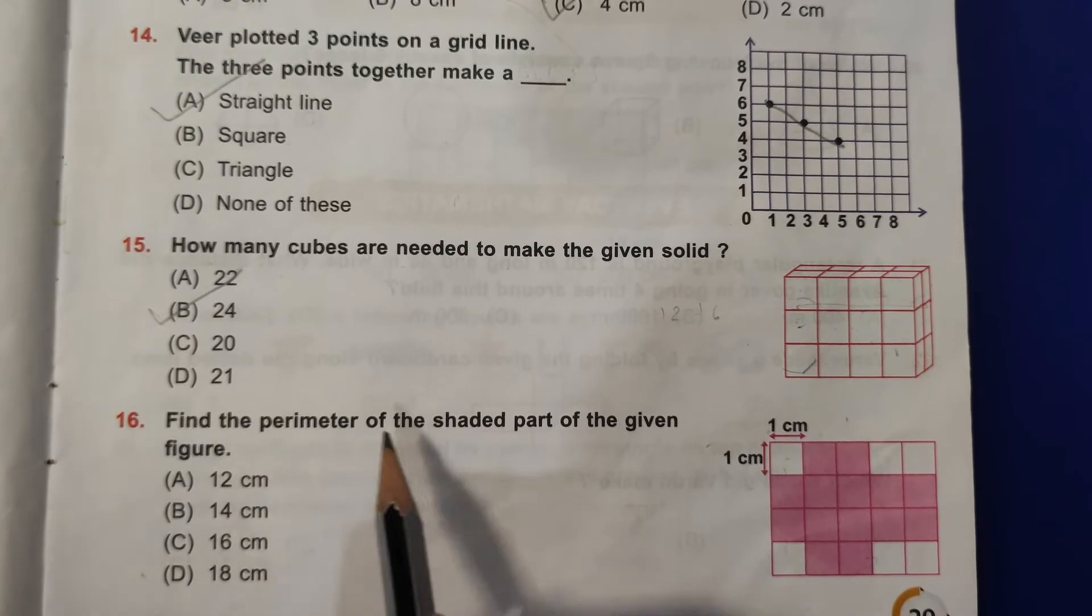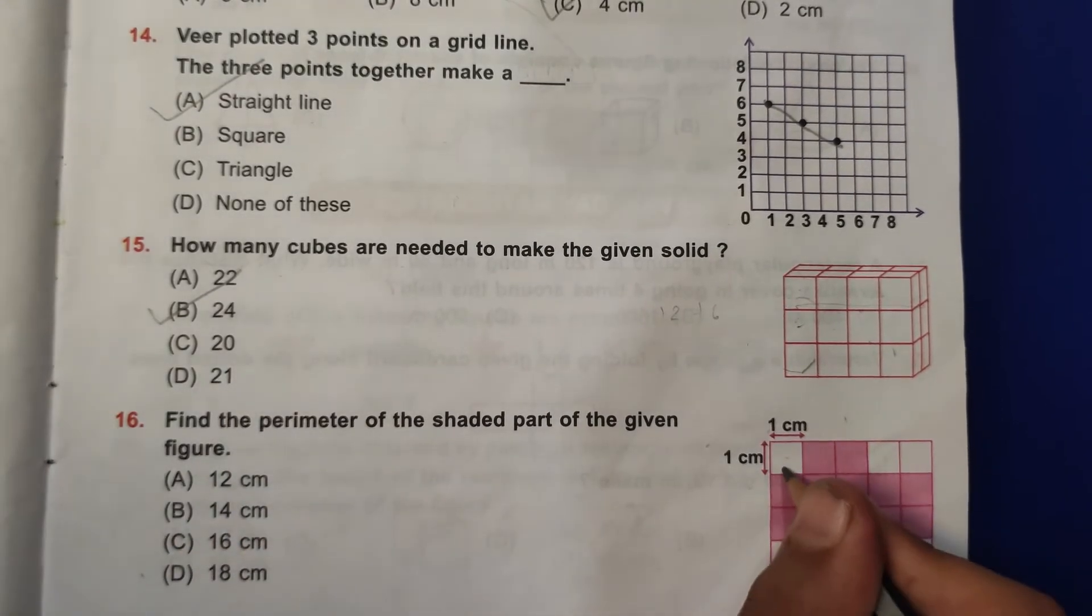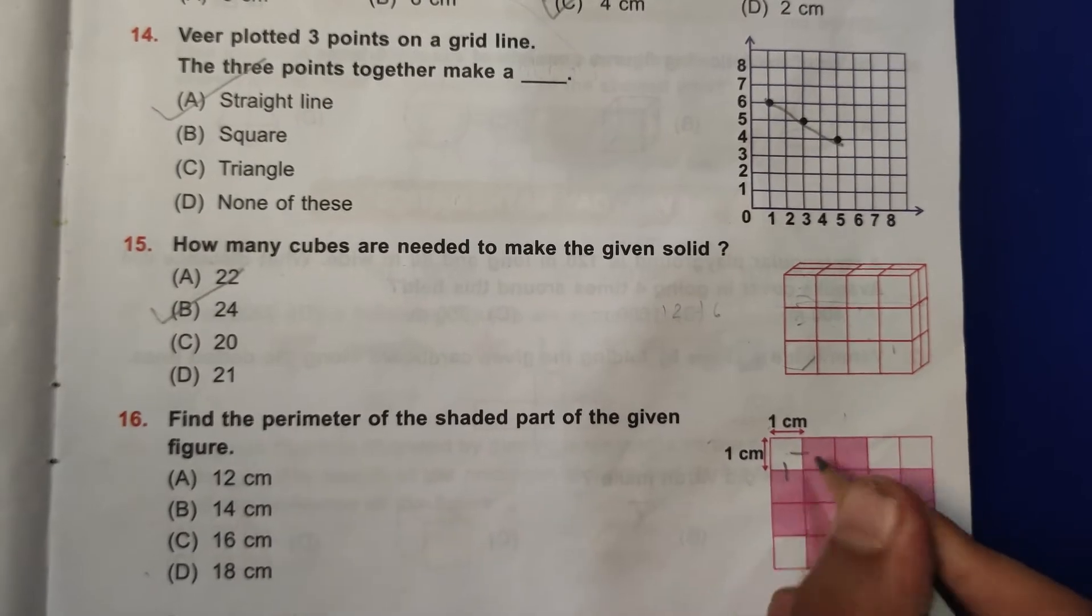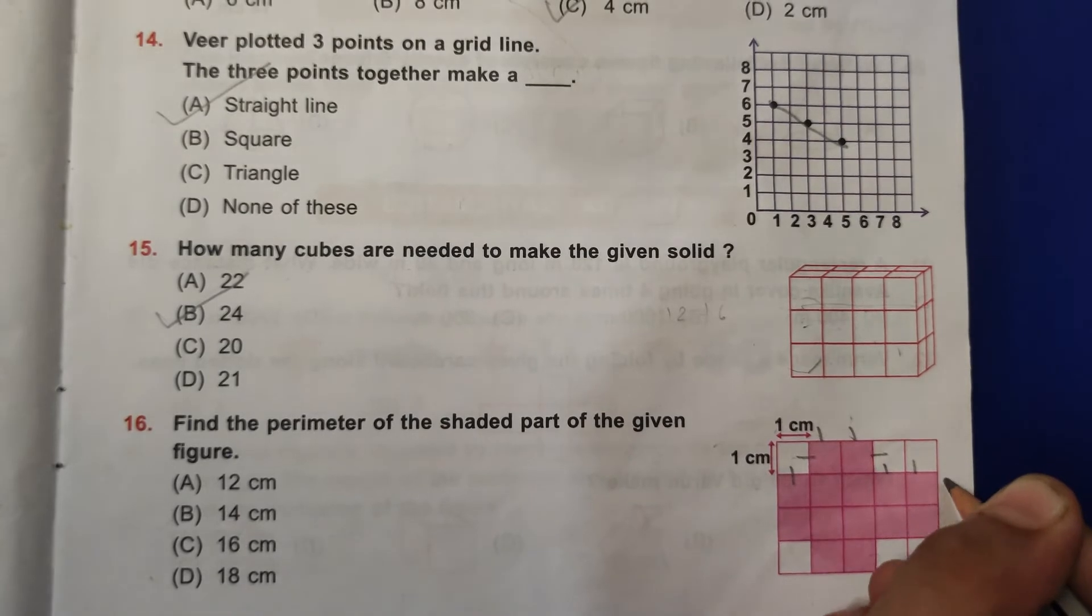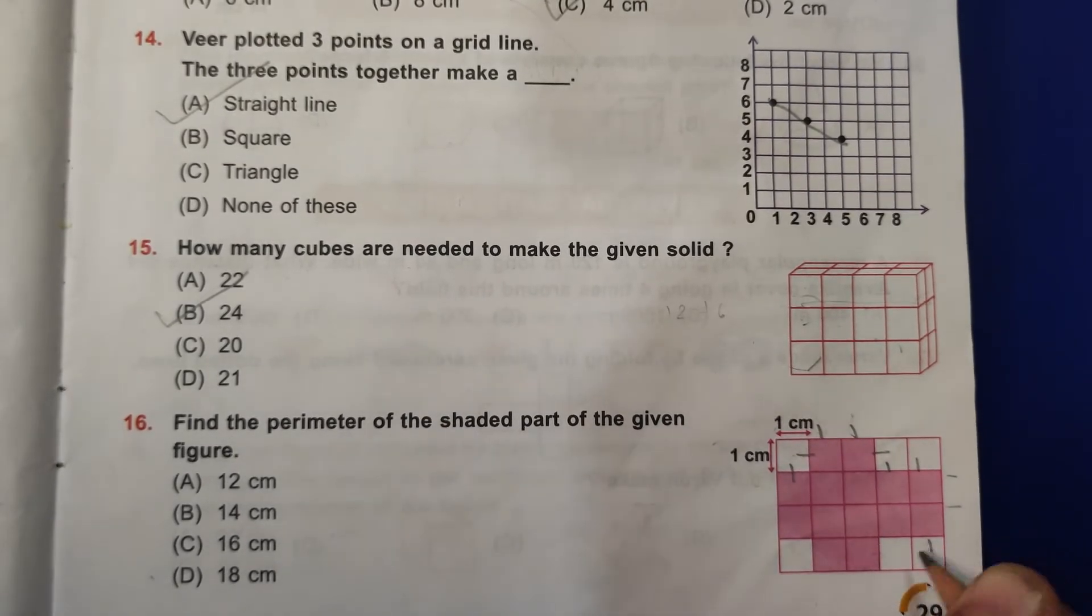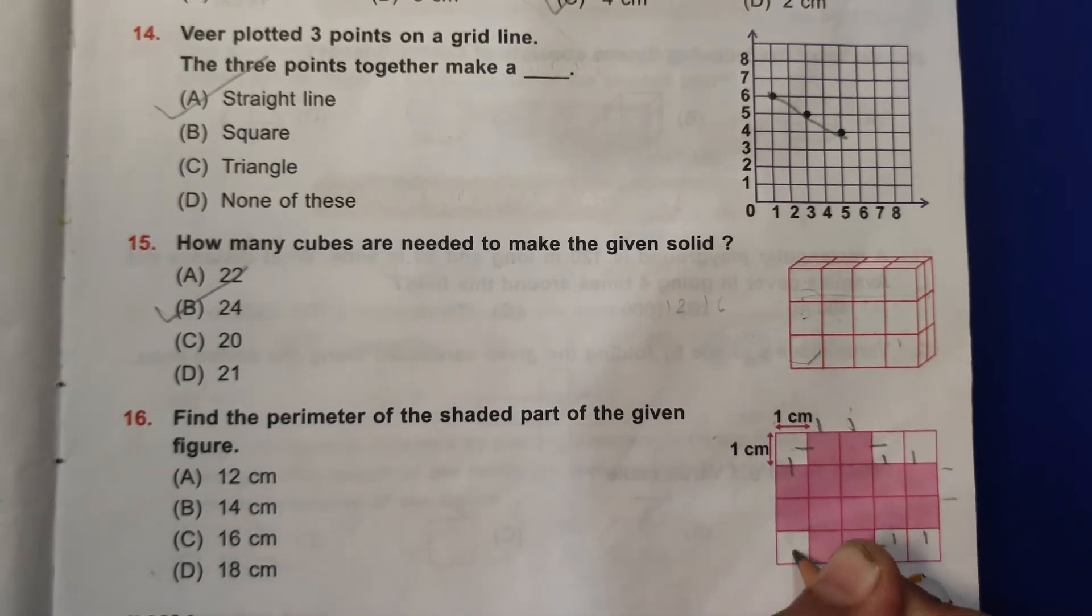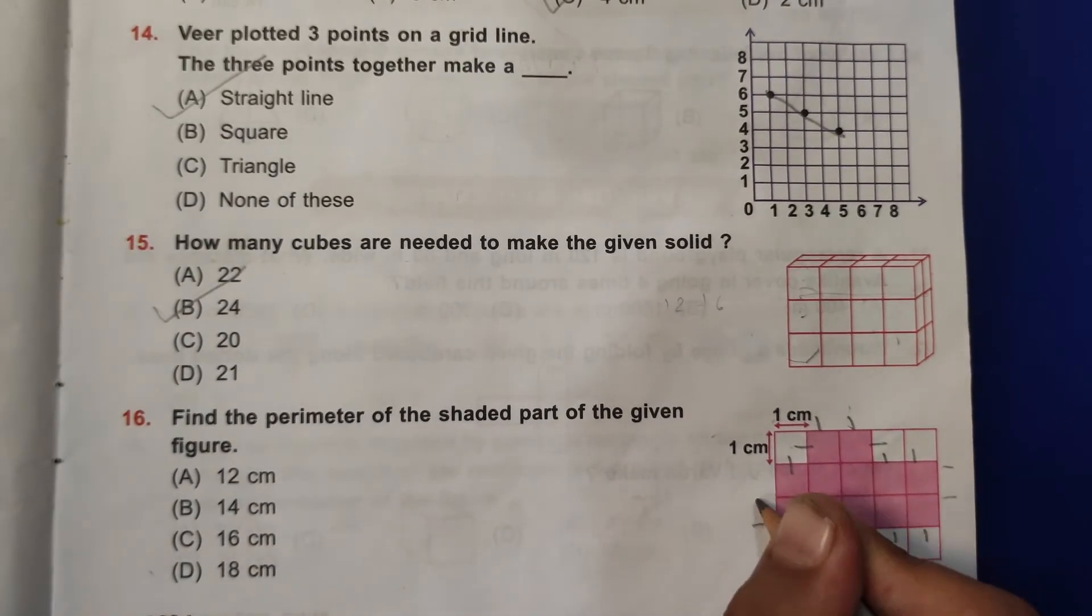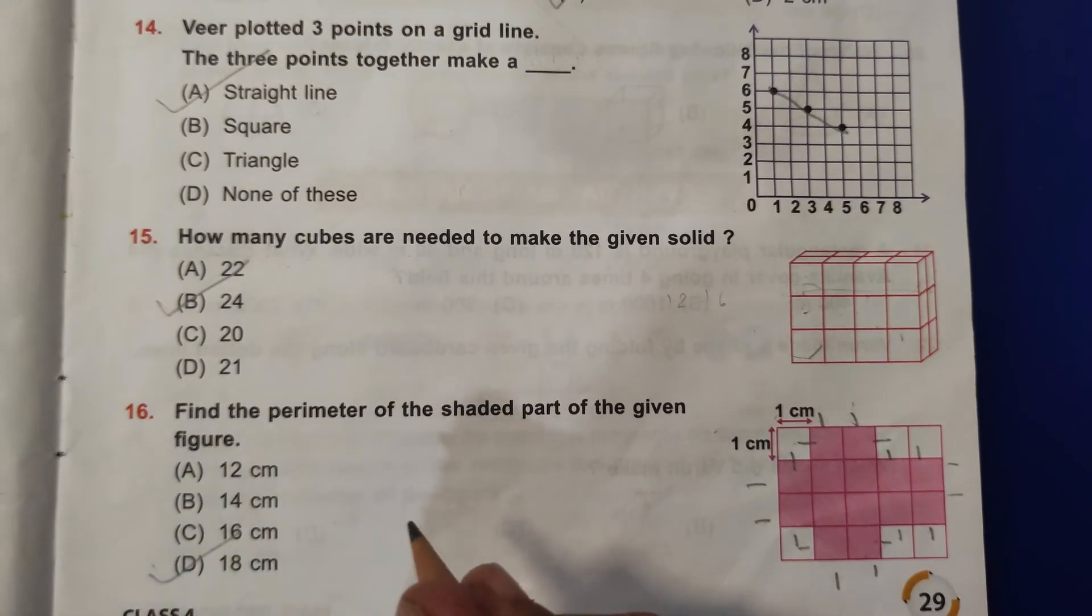Sixteenth question: find the perimeter of the shaded part of the given figure. So here 1, 2, 3, 4, 5, 6, 7, 8, 9, 10, 11, 12, 13, 14, 15, 16, 17, 18. So this is 18 centimeters. So this is the correct answer.